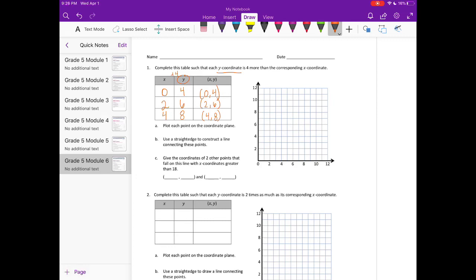You can choose different points, different x and y-coordinates, but at the end when we draw our line and plot our points, our line should be the same. So it says plot each point on the coordinate plane. I'm going to plot 0, 4, 2, 6, and 4, 8.